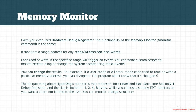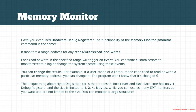HyperDbg monitors a range of addresses for any reads, writes, or a combination. It brings these as events, so you can write custom scripts, create logs, or change the system state. You can also change the results — for example, if a function tries to read or change a special value in memory, you can ignore the changes applied to that address and the program won't know that its changes didn't apply.